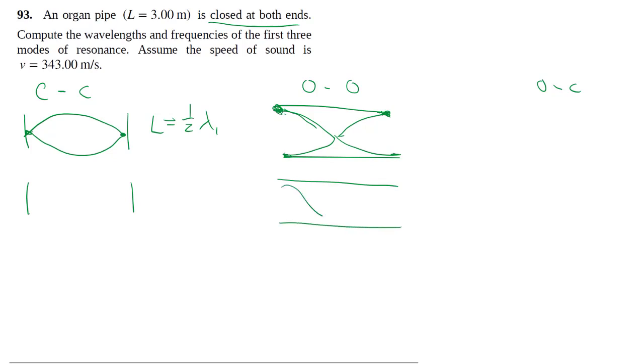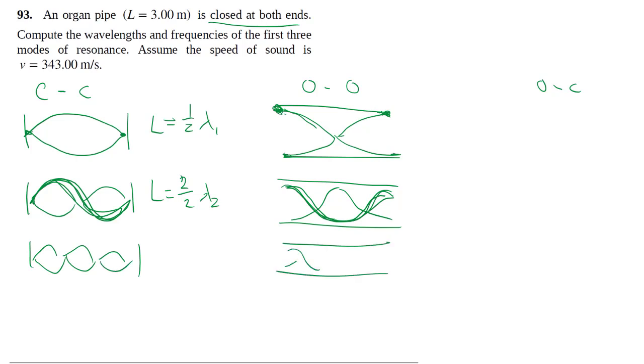call the first overtone, you have these kinds of patterns where this is one wavelength—it takes two humps to make one wavelength—and this is also one wavelength. Again, they want the first three modes, so let's put that in here as well. Basically, you're seeing here